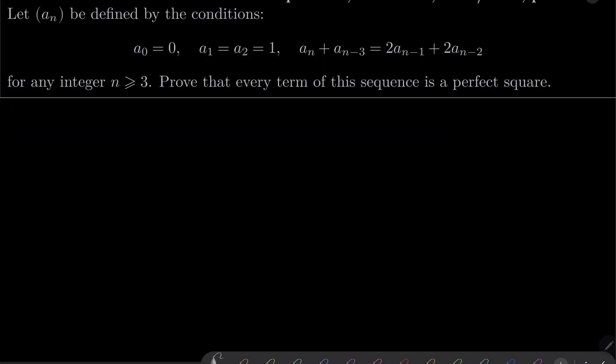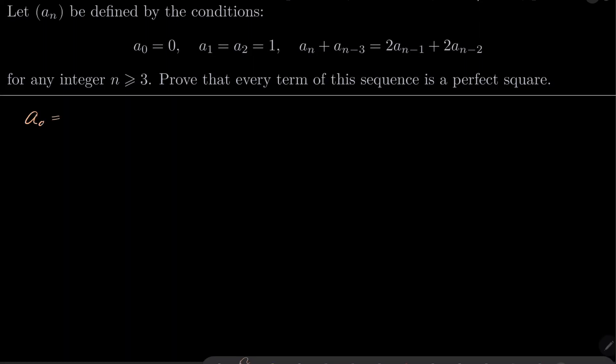Alright, so it turns out if we write the first terms of our sequence: a_0 is 0, a_1 is 1, a_2 is also 1. Beyond that, a_3 is 4, which is 2 squared. This is 0 squared, this is 1 squared, 1 squared. The next term, well, by the way, I get these terms from this recursion.